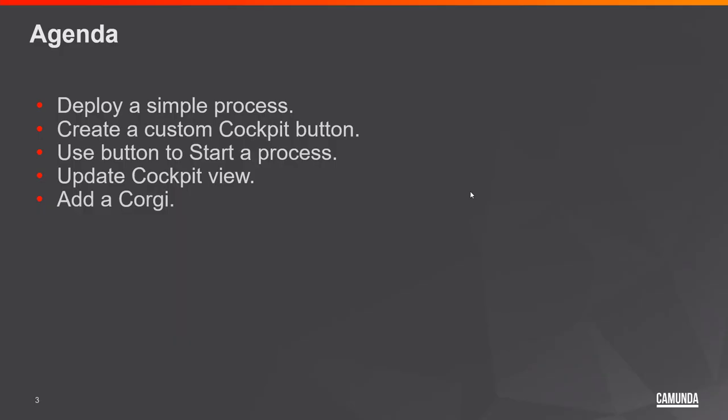Today we're going to deploy a simple process and then create a custom Cockpit button. Cockpit already exists as a front-end application for Camunda and the engine, and we're going to add to it — specifically a button to start a process instance and update the view after starting it. Morgendorfer has also requested we add a corgi somewhere, and I have no problem with that.